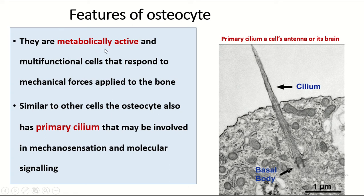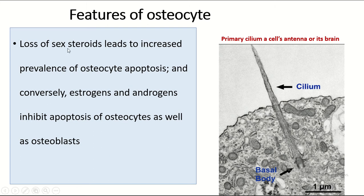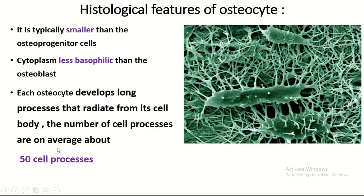Osteocytes are metabolically active and multifunctional cells that respond to mechanical force applied to bone. Like other cells, the osteocyte also has a primary cilium that may be involved in mechanosensation and molecular signaling. The loss of sex steroids leads to increased prevalence of osteocyte apoptosis; conversely, estrogen and androgen inhibit apoptosis of osteocytes as well as osteoblasts.